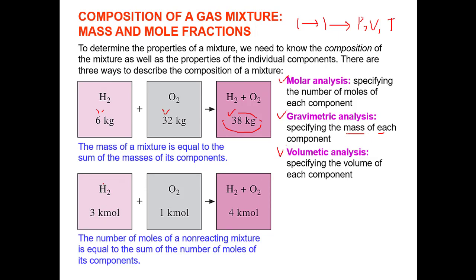For molar analysis: if hydrogen has 3 kilomoles and oxygen has 1 kilomole, the number of moles of the mixture is the sum of all individual components. In general, the mass of the mixture Mm equals the sum of mi, and the number of moles of the mixture Nm equals the sum of ni for all individual components.